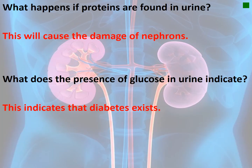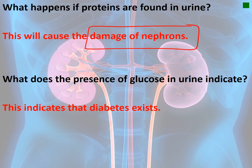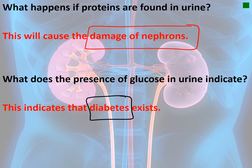If a urine analysis test shows proteins in the urine, this indicates damage to the nephrons and the kidneys — there should be no proteins in urine. The presence of glucose in the urine indicates diabetes, as a high level of sugar in the urine is a sign of this disease.